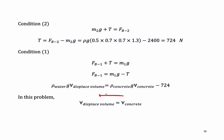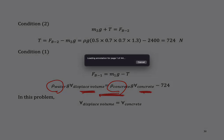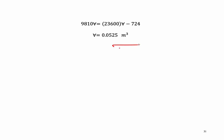As shown here, please be very careful. In this problem, the displaced volume is equal to the volume of the concrete. However, the density of water is not the same as the density of the concrete. We can calculate the volume of B as 0.0525 meter cubed.